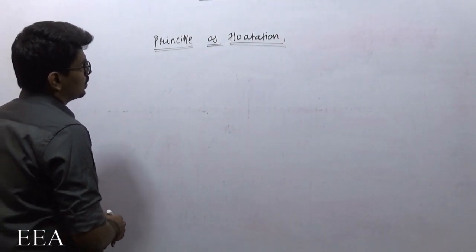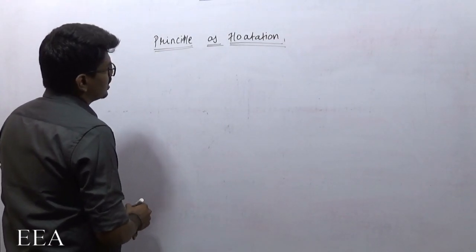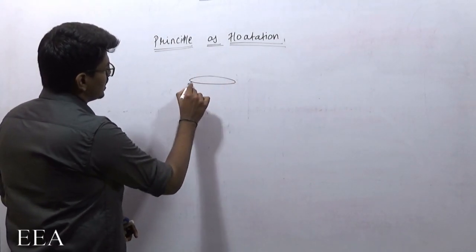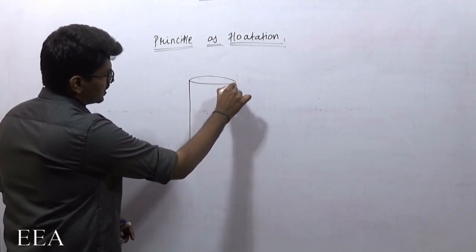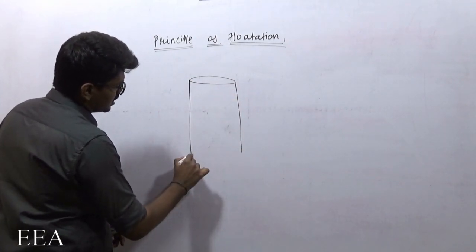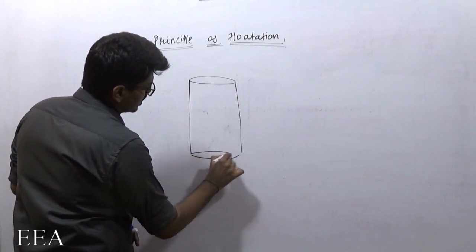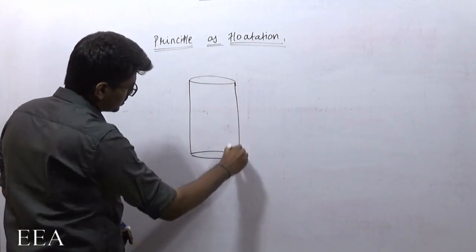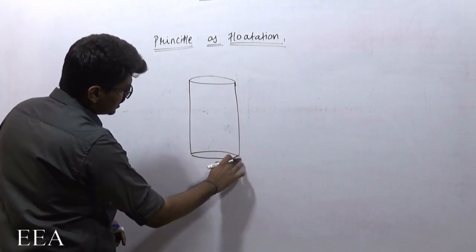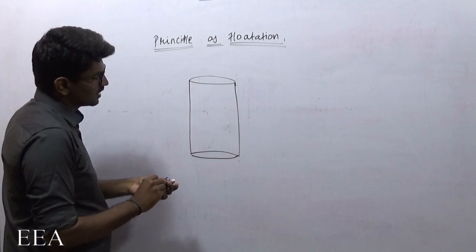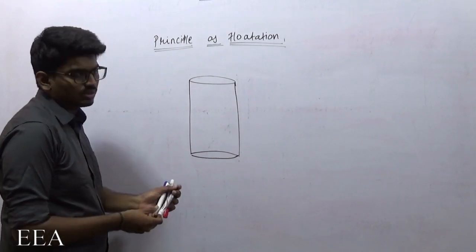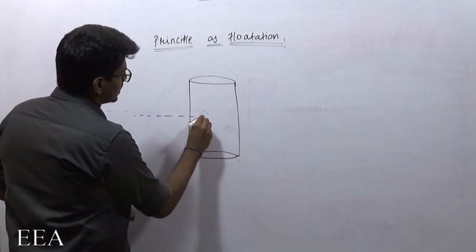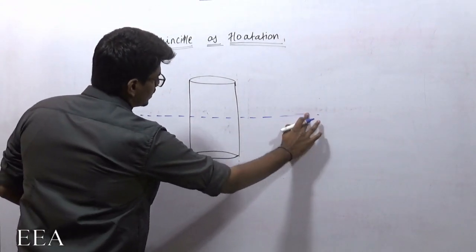First, what is meant by the principle of flotation? Suppose if a body is there — let me take any body, it is a solid body. This solid body — I need to make this solid body float in a liquid.